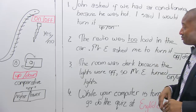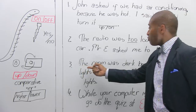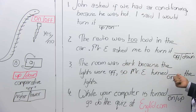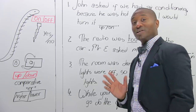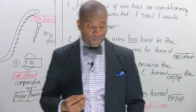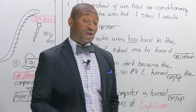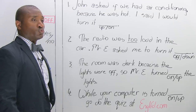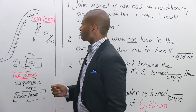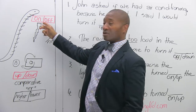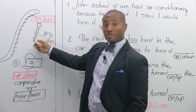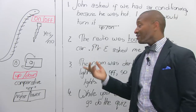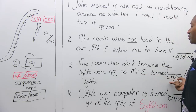Number three: the room was dark because the lights were off, so Mr. E turned something — the lights. If the room were dark, there are no lights. What's the opposite of off? The opposite of off is on. We need to add power to the lights. So when we add power and turn on the lights, we will be able to see. Mr. E turned on the lights.